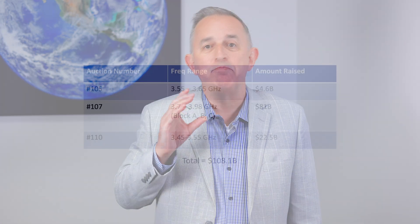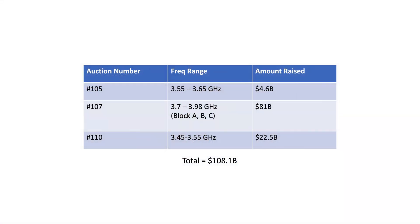In fact, in the United States, the Federal Communications Commission has set several frequency spectrum options in this range, and they have raised over a hundred billion dollars, as can be seen in the table — and that's only for three auctions in one country.